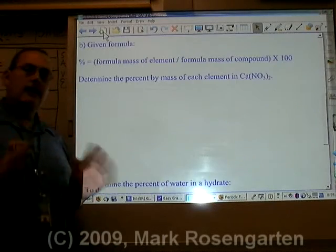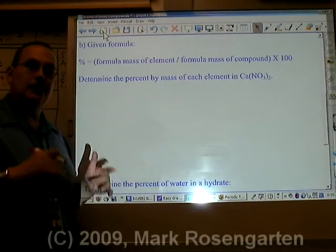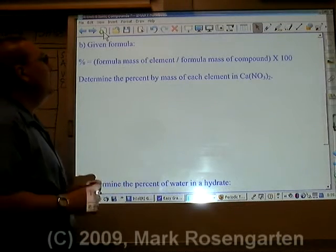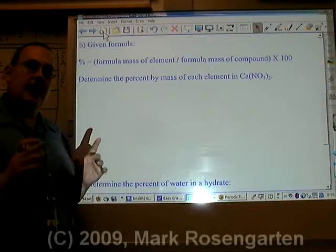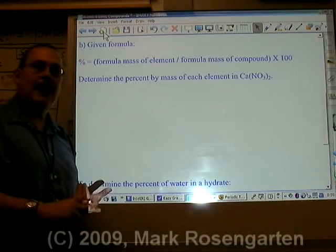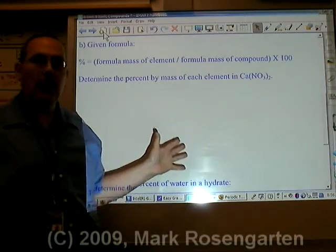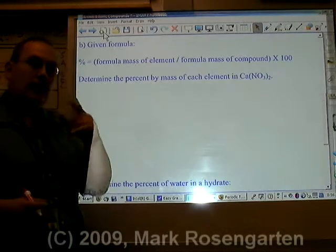If you're given the formula and asked to find the percent composition of an element in that compound, the percent composition of that element is the formula mass of that element—that means the atomic mass times however many atoms of that element are there—divided by the formula mass of the whole compound, times 100.